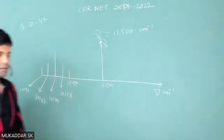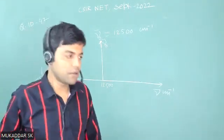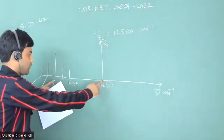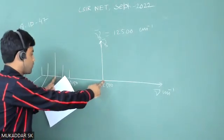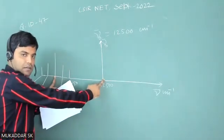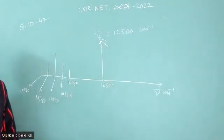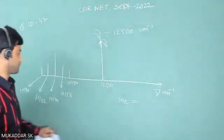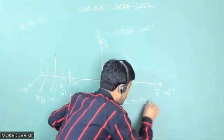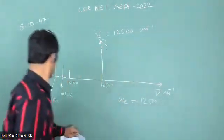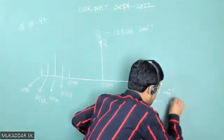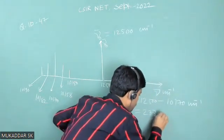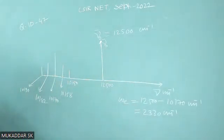We have to calculate the vibrational frequency. As you know, the separation between the Rayleigh line and the Stokes line is the vibrational frequency. So the vibrational frequency equals 2500 minus 2070 cm⁻¹, which corresponds to 2330 cm⁻¹. This is the vibrational frequency of the molecule.